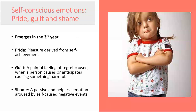By the preschool years, children feel and express all secondary emotions, including pride, guilt, and shame. Pride is pleasure felt from one's own achievement. Guilt is a painful feeling of regret caused when a person causes or anticipates causing something harmful, and is often felt when one focuses on how one's actions might affect someone else. Shame, on the other hand, is focused more on the self and on feeling a lack of self-worth. Research has shown that feeling guilt after a moral transgression is associated with positive outcomes, whereas feelings of shame are less conducive to positive developmental outcomes.